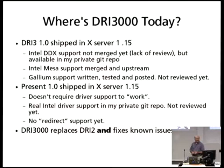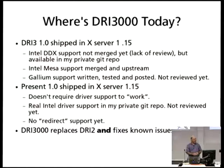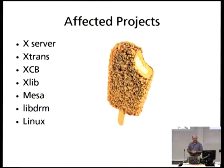So where is DRI 3000 today? Did we actually have any success? Have we gotten some stuff done? Did I fix DRI 2? Well, mostly. DRI 3 and the Present extensions version 1.0 shipped in the server. There are some advantages to being the X server maintainer — some of the code that I wanted to merge, it was like: I'm not going to ship your code until you review my patches. So all of my code got neatly reviewed and merged in time for the merge window to close. DRI 3000 successfully replaces DRI 2, fixes known issues, and provides a lot of opportunity to implement new GL extensions that we couldn't do in the existing system. Total unmitigating success.